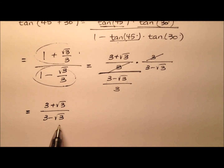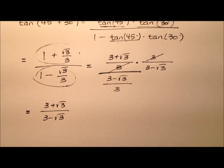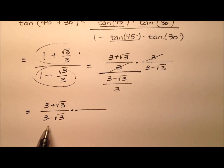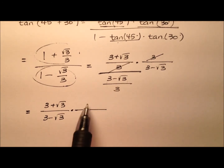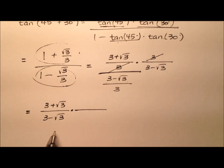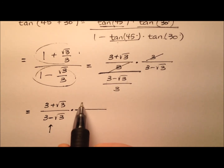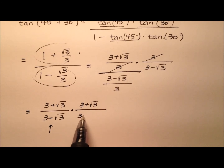We don't like having this radical expression in the denominator, so let's go through the process of rationalizing our denominator. We'll do so by multiplying the numerator and denominator by the conjugate of this denominator — just changing the sign in the middle — so we'll have 3 plus the square root of 3.